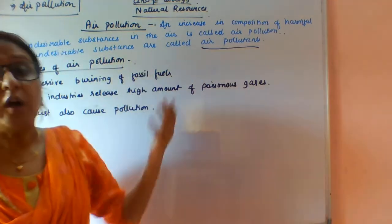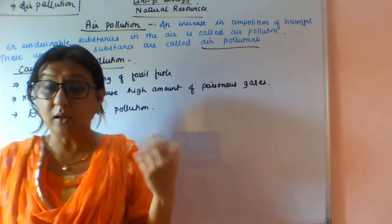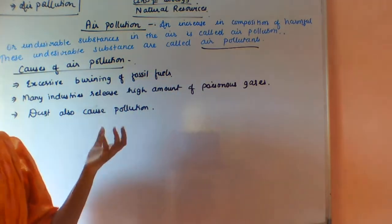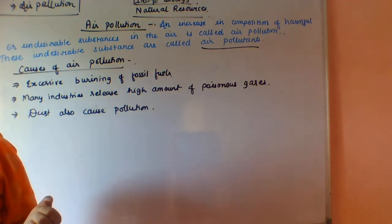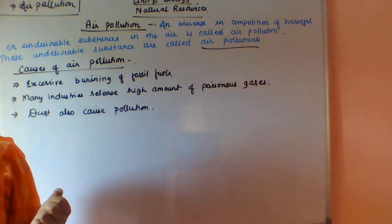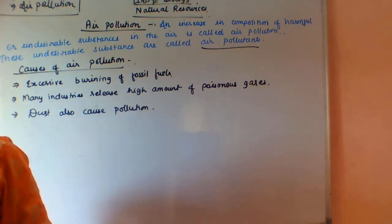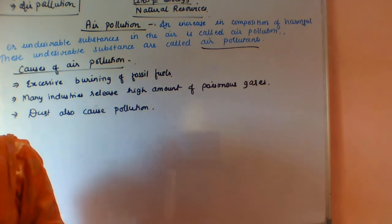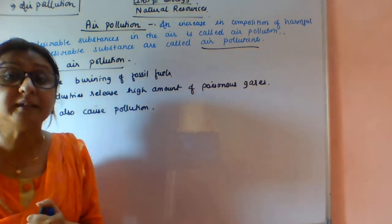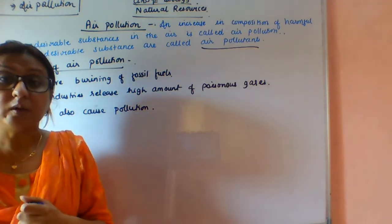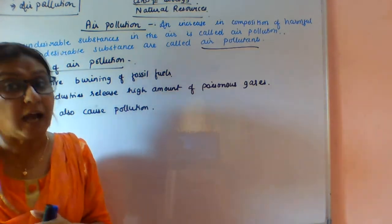Acid rain is very harmful for living organisms, aquatic life, land, and monuments. The combustion of fossil fuels also increases the amount of suspended particles in the air, including unburnt carbon particles which are also called hydrocarbons.